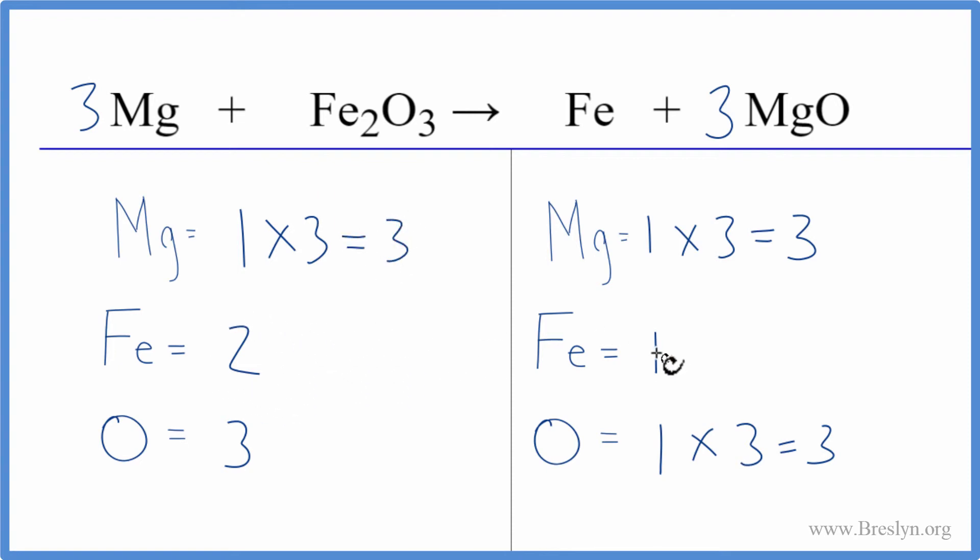I have two irons here and one here. I can just put a two in front of the Fe. One times two. That gives us two. In this equation, it is balanced.